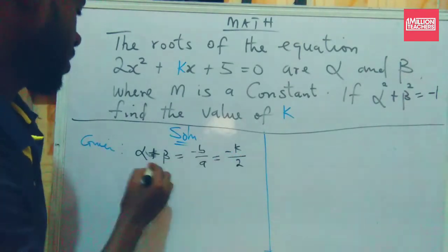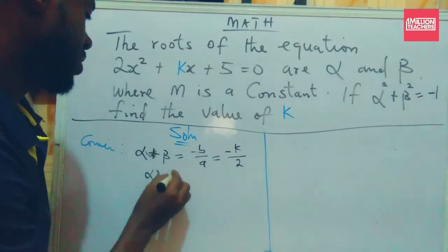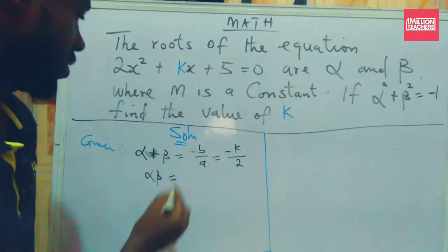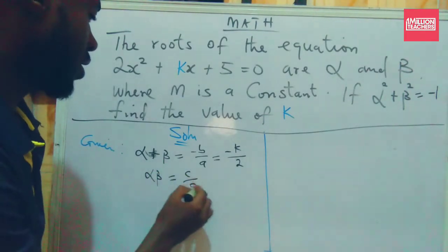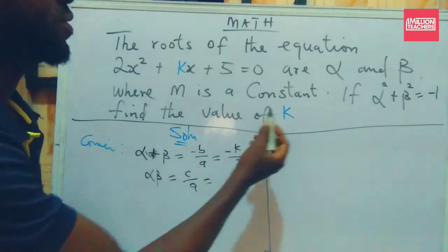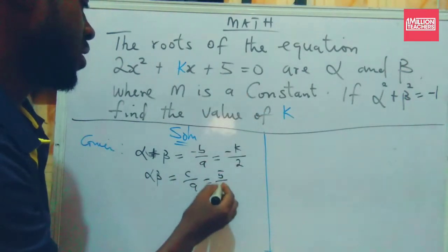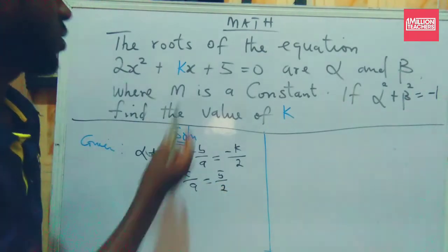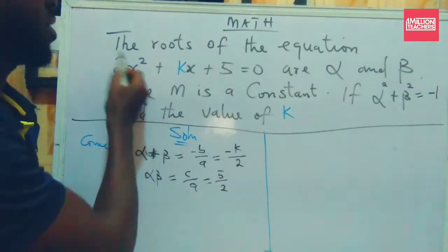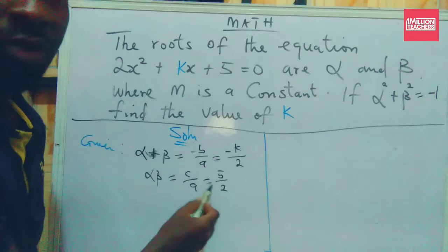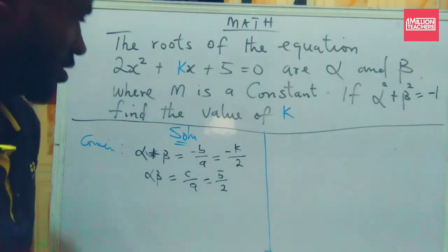And then we know that our alpha beta, which is the product of roots, is given to us as c over a. Our c is 5, our a is 2. So all we need is just these two things to solve this problem.